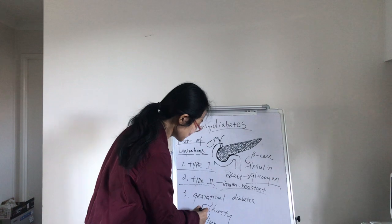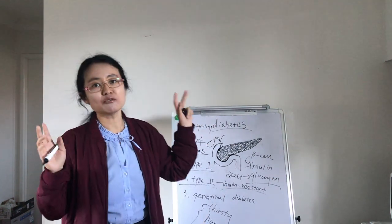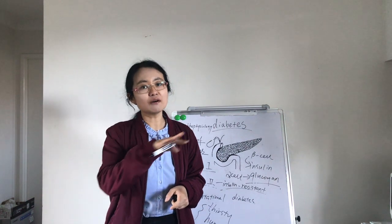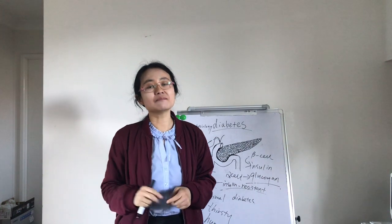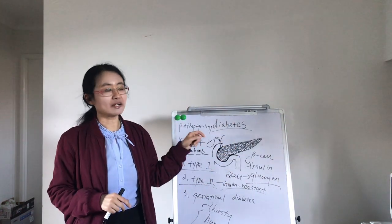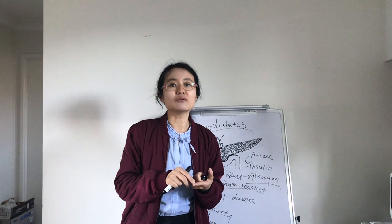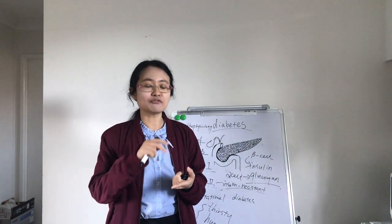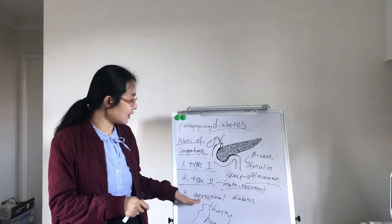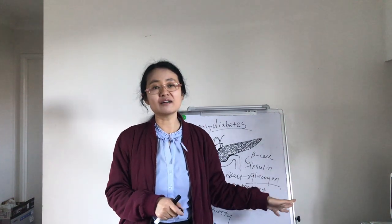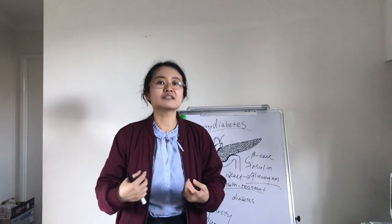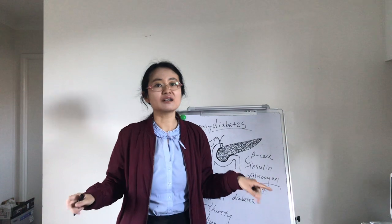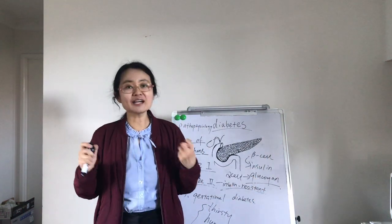To prevent diabetes, remember to keep a low-sugar, low-fat diet and have more exercise. It is also very important to constantly monitor your glucose level. If you find your glucose is higher than the normal range, especially higher than 8 mmol per liter, you must go to the doctor and seek more treatments to prevent further deterioration. Thank you very much for your attention.